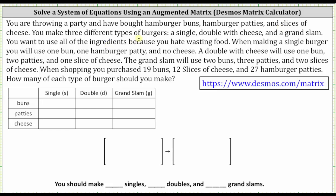You are throwing a party and have bought hamburger buns, hamburger patties, and slices of cheese. You make three different types of burgers: a single, a double with cheese, and a grand slam. You want to use all the ingredients because you hate wasting food. A single uses one bun, one patty, and no cheese. A double with cheese uses one bun, two patties, and one slice of cheese. The grand slam uses two buns, three patties, and two slices of cheese. When shopping, you purchase 19 buns, 12 slices of cheese, and 27 hamburger patties. How many of each type of burger should you make?